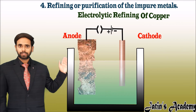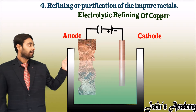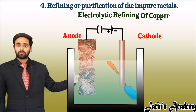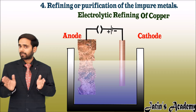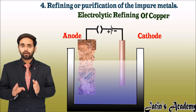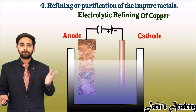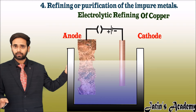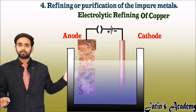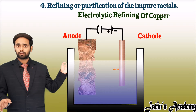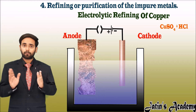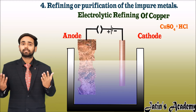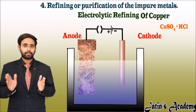Before switching on the circuit, add some electrolyte to the water. We add the electrolyte because pure water is a bad conductor of electricity — in order to conduct electricity we need to add an electrolyte solution. Here the electrolyte solution is a mixture of copper sulfate and hydrochloric acid. We use copper sulfate because using another metal's salt would create a problem.